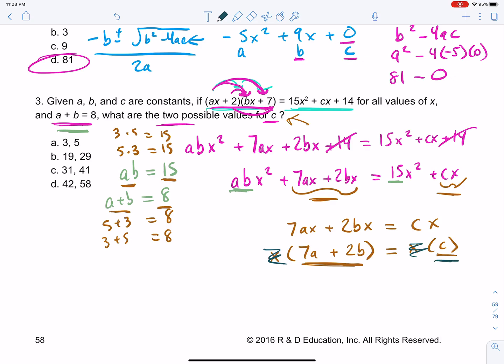So we have two possible options. c is fixed. Now we have 7a + 2b. And there's only two scenarios to test. The first scenario, scenario number one, is what? a is 3 and b is 5.